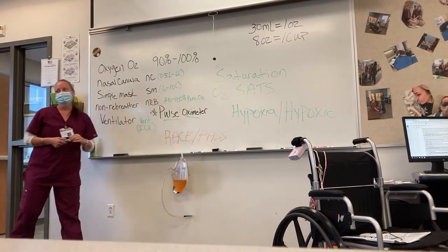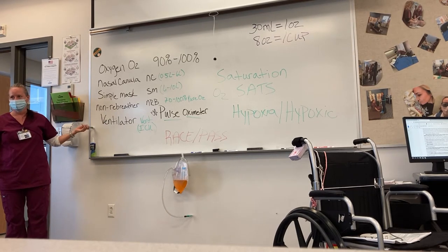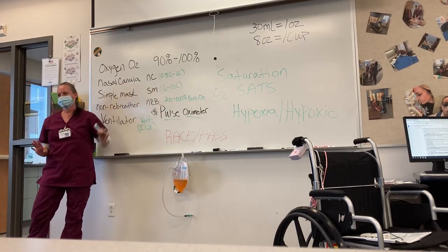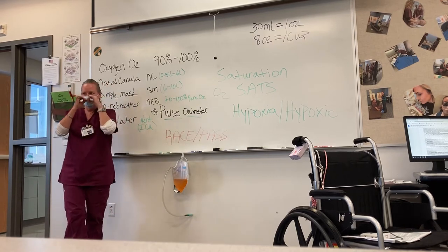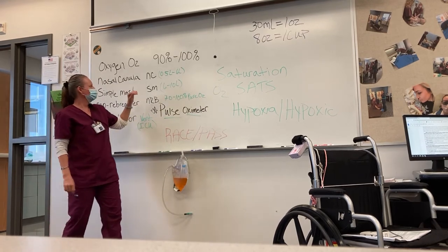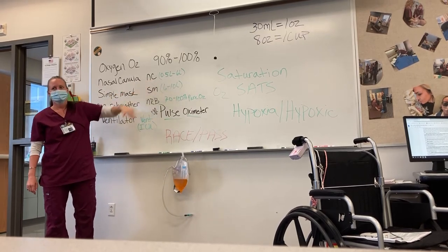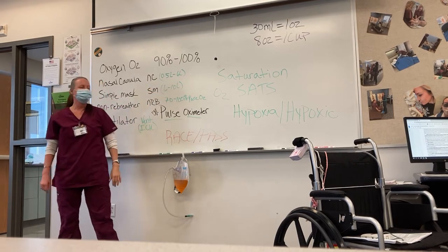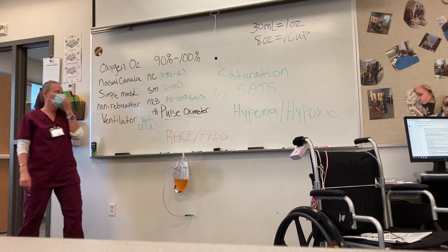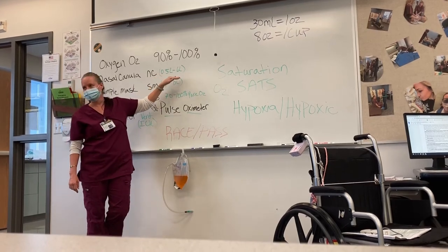If they are hypoxic, we are going to give them supplemental oxygen. We will start with a nasal cannula — you've all seen the tubes that go in the nose, around the ears. That is called a nasal cannula, abbreviated NC. It will blow a half liter to six liters. We measure oxygen in liters. We will hook our patient up and give them anywhere from a half liter to six liters on an NC.